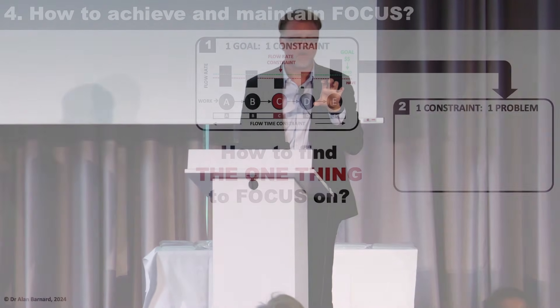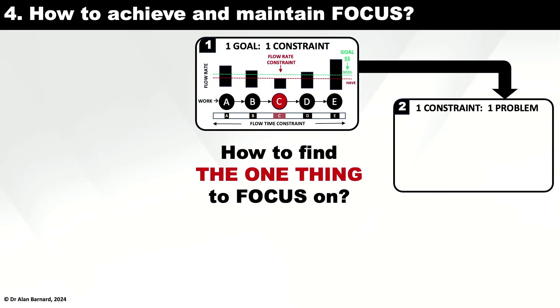So I end up asking: what is the constraint? This could be at the system level, the department level, or the process level. The goal of the system places a demand on my department — what don't I have enough of? Then I go to one constraint, one problem. There's a gap between what I have and what I need. The Pareto principle applies, and it's fractal — it applies on itself. 20% of 20% will give me 80% of 80% of that gap. One problem typically explains 51% of that gap. That's the one problem I'm looking for.